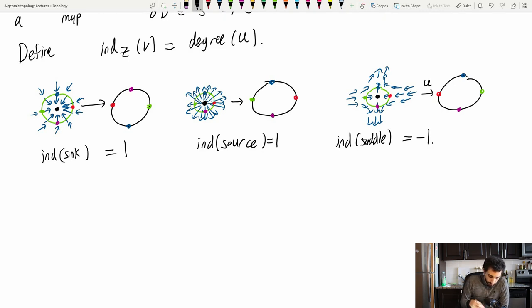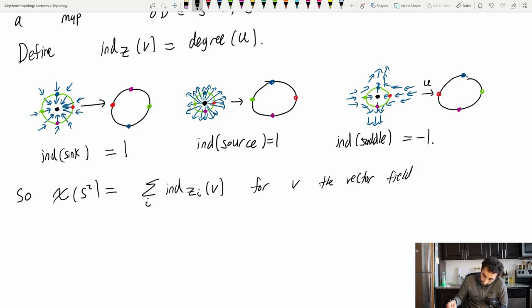All right. So let's start putting things together. The Euler characteristic of S2 seems to be equal to the sum over i of the indices of all of the zeros of this vector field. For V, the vector field here. So I had two zeros at the top and the bottom. And at the top, I had a source. And at the bottom, I had a sink. Both of those are index one. So one plus one is two. That also happens to be the Euler characteristic. Is this a coincidence? No, it's not. Of course.